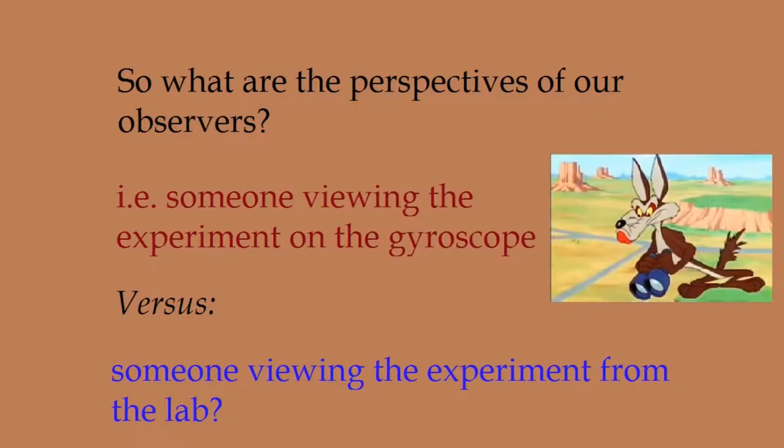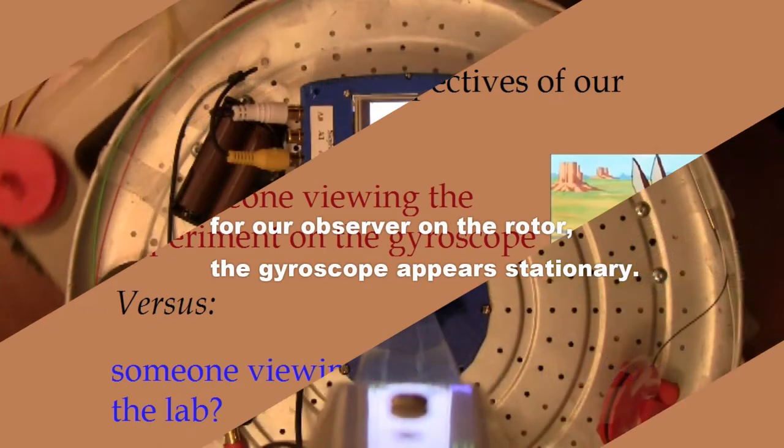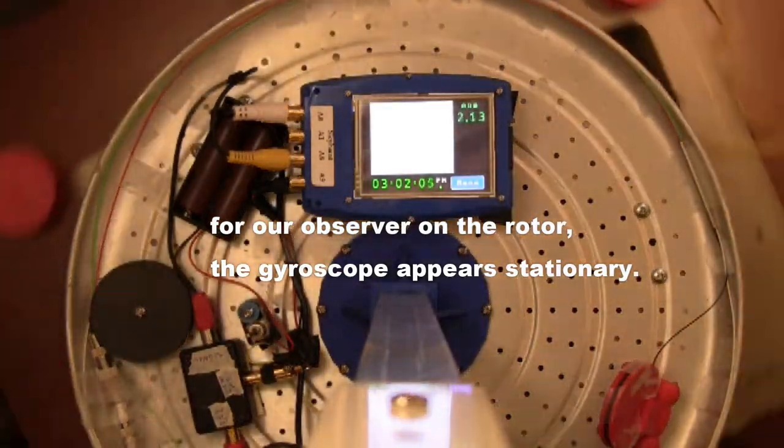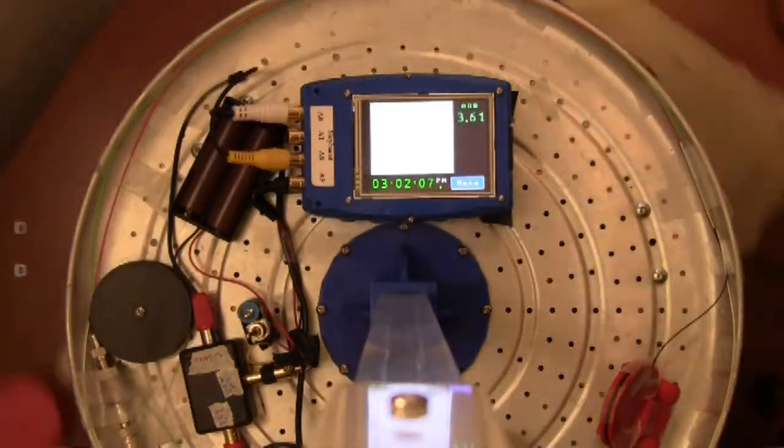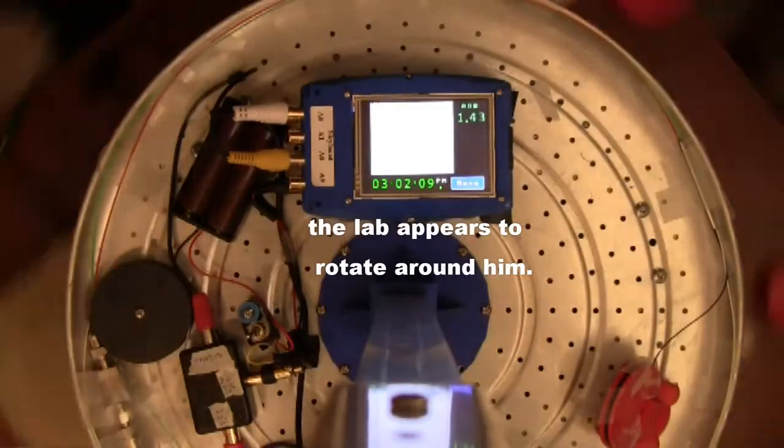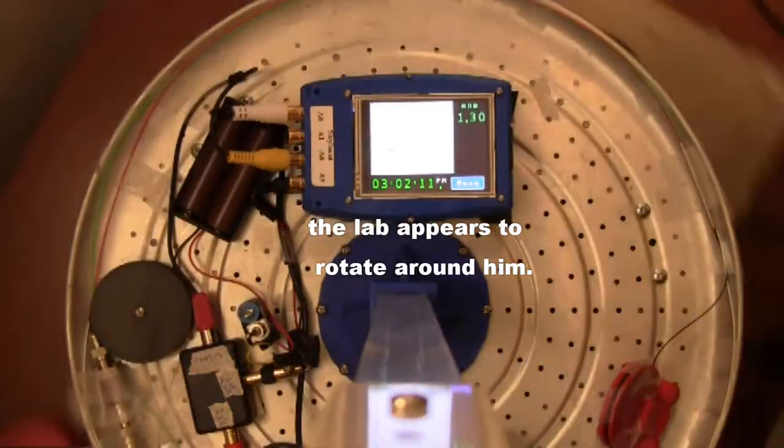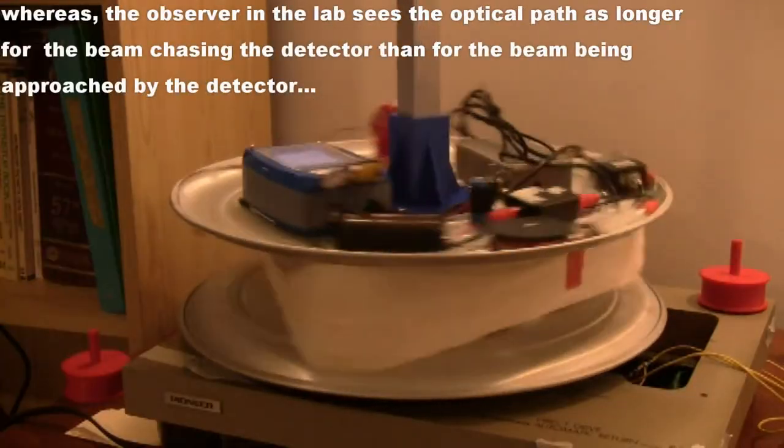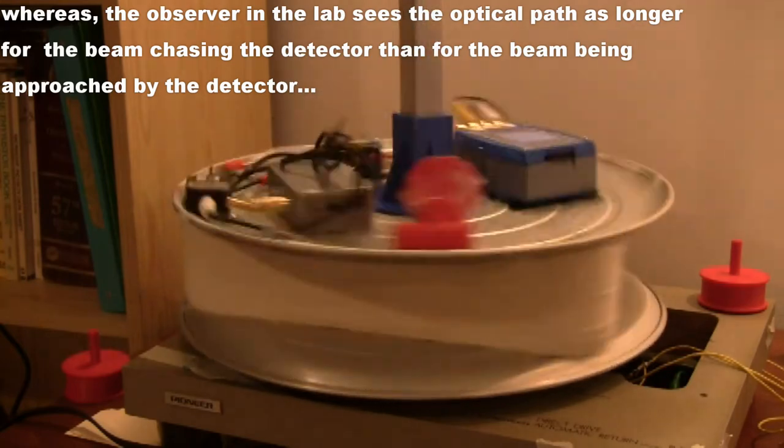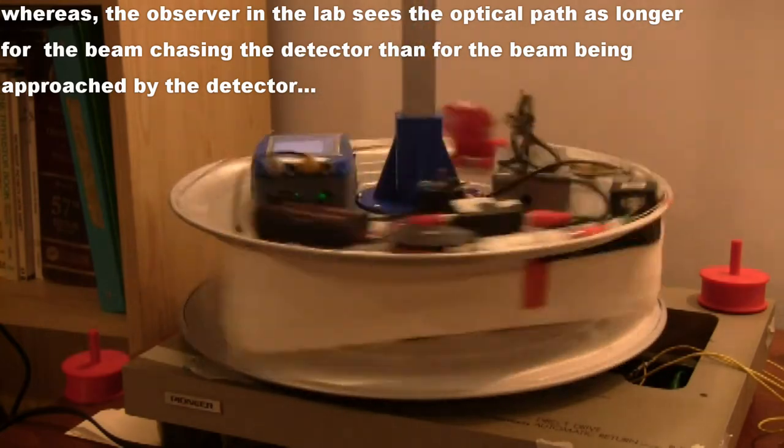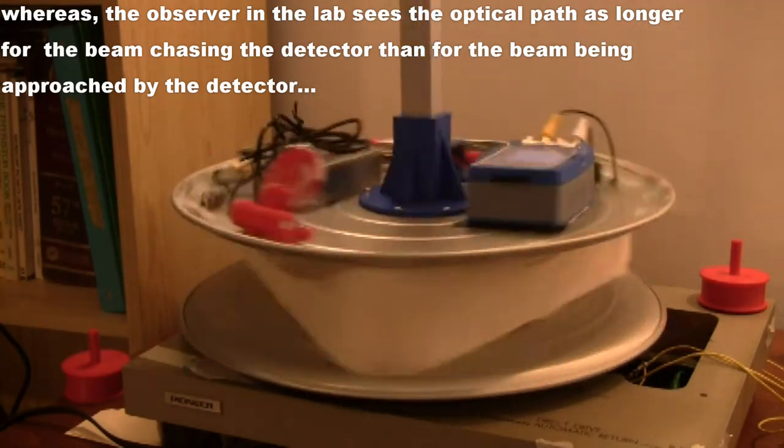So what are the perspectives of our observers? For example, someone viewing the experiment on the gyroscope versus someone viewing the experiment from the lab. For our observer on the rotor, the gyroscope appears stationary. The lab appears to rotate around him. Whereas the observer in the lab sees the optical path as longer for the beam chasing the detector than the beam approached by the detector.